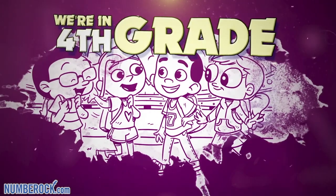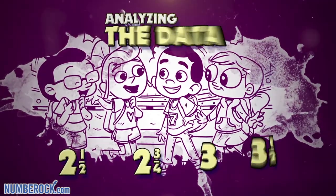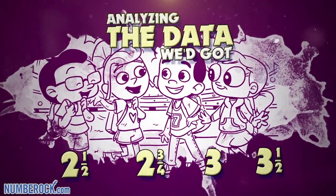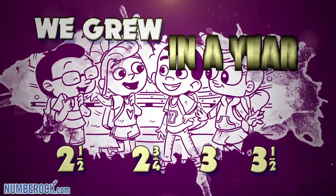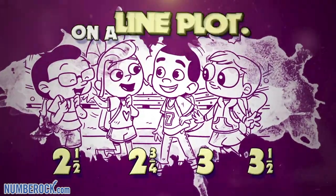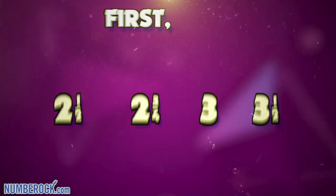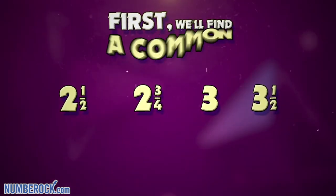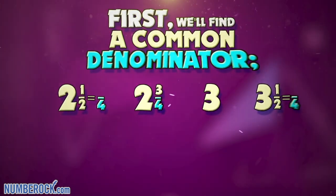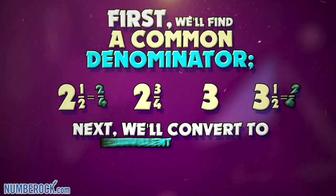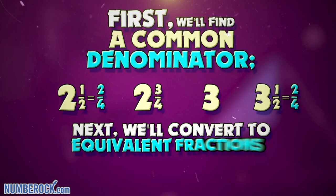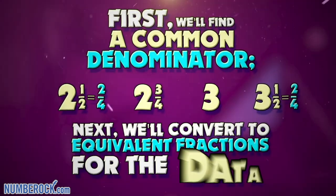We're in the fourth grade analyzing the data we got about how many inches we grew in a year on a line plot. First we'll find a common denominator. Next we'll convert to equivalent fractions for the data.